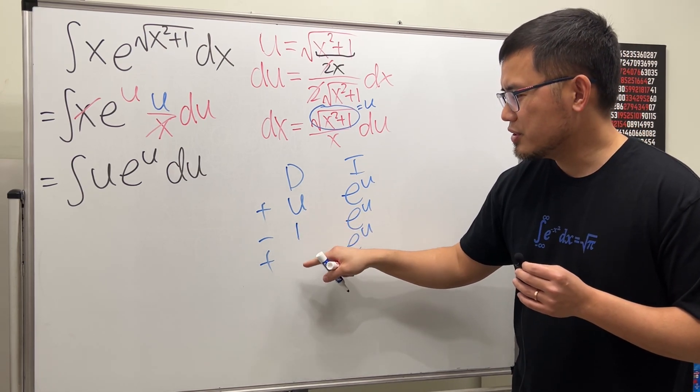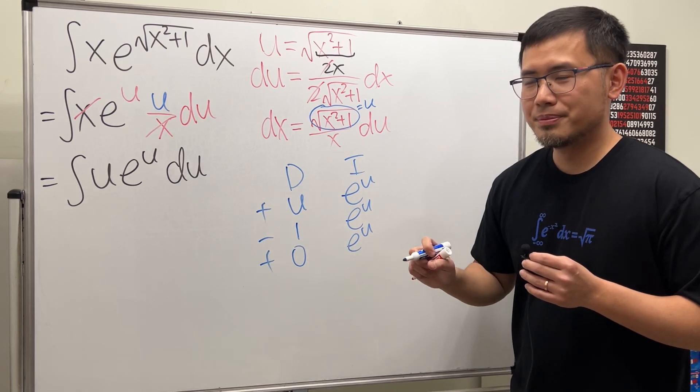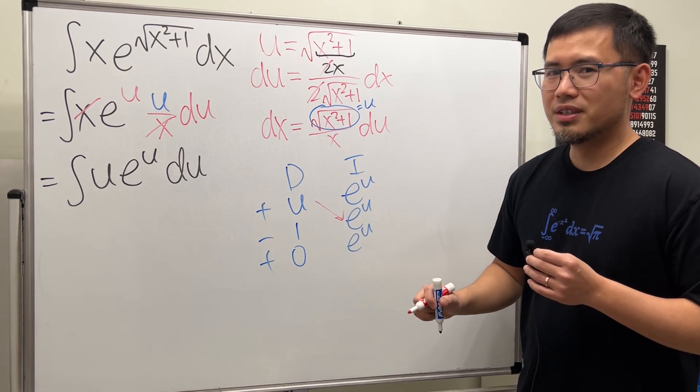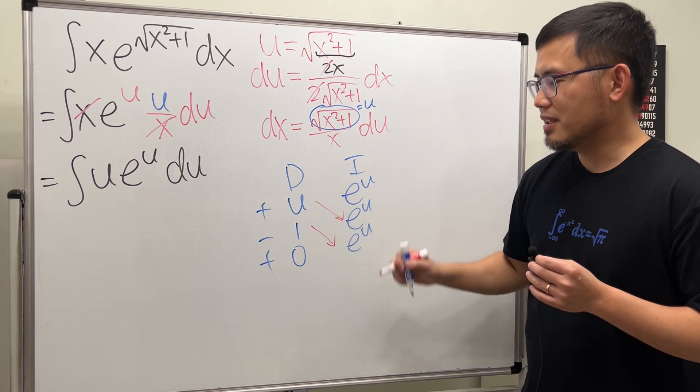Let's do this one first: e to the u, e to the u, differentiating u one time we get one, differentiate this one more time we get zero. Have a look, this right here is the first part of the answer, at the next part of the answer you don't have to continue anymore.